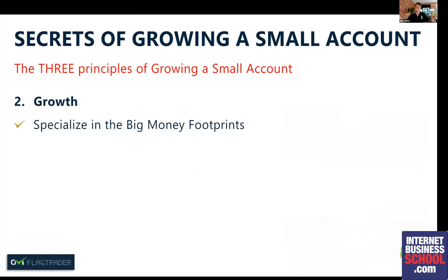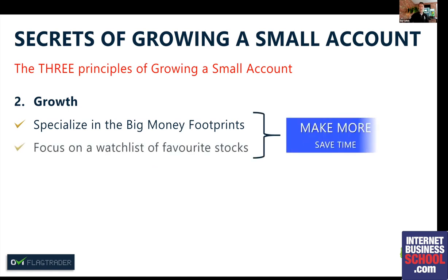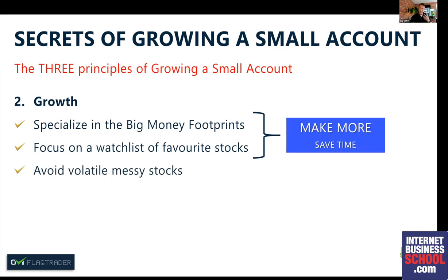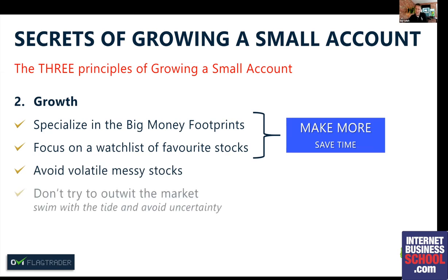For growth: you've got to specialize. A brain surgeon makes more than a GP — people who specialize make the most in every field. We specialize in big money footprints. We narrow our focus to a specific list of stocks, which dramatically reduces our workload, saves time, and makes more. We avoid things that are volatile and messy. We don't try to outwit the market — if the trend is up we trade with that, if it's down we either avoid it or trade with that direction.